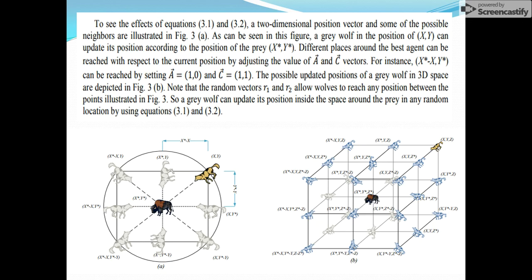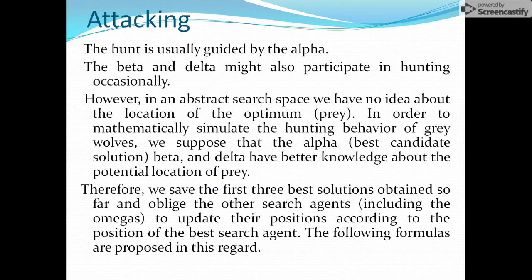After encircling, the next step is attacking. The hunt is guided by alpha. In an abstract search space we do not know the exact location of the optimum, so to mathematically simulate the hunting behavior of gray wolves, we assume that alpha, beta, and delta have the best knowledge about the potential location of the prey. We find the three best solutions — alpha, beta, and delta — and oblige all other wolves (omega etc.) to update their positions accordingly.